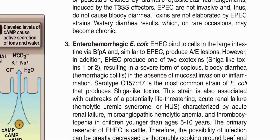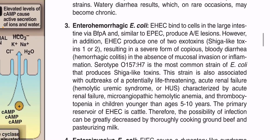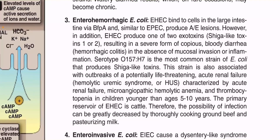In the absence of mucosal invasion or inflammation, you can identify the bacteria through serotyping. The most common strain is Escherichia coli O157:H7, which produces Shiga-like toxin.